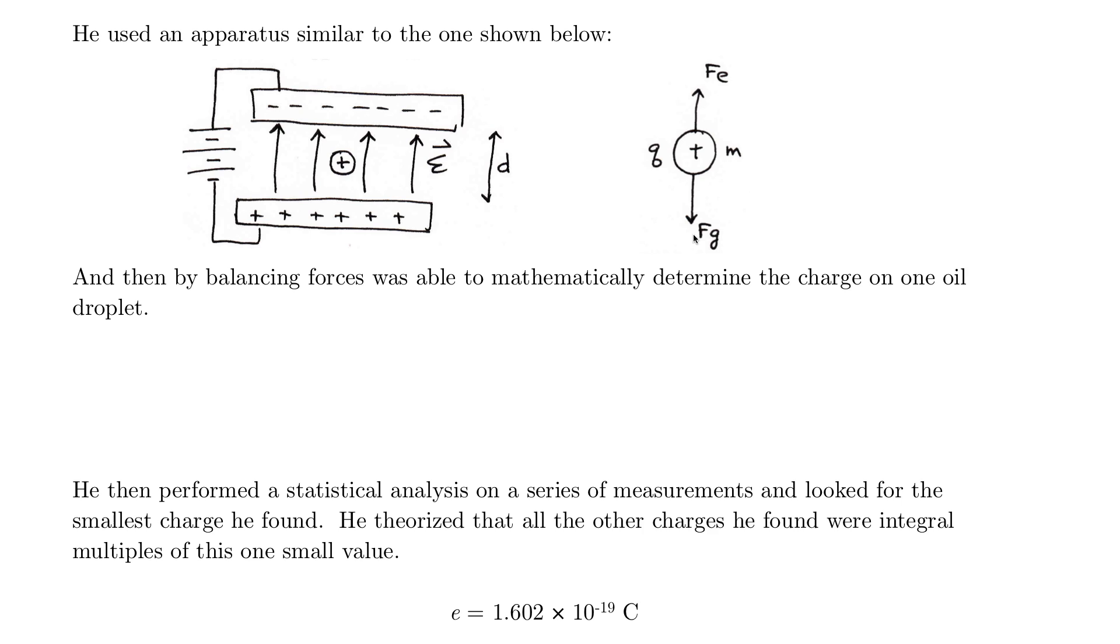By balancing these forces, he was able to determine the charge on one oil droplet. Here's what he did mathematically. He said the force of electricity was equal to the force of gravity. He knew what the electric field was because he could measure the potential difference, and he knew what the mass of the oil was and g. So then the charge on one little droplet is just mg divided by the electric field.